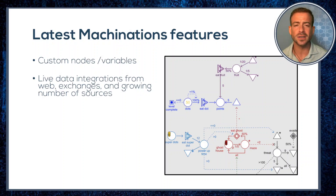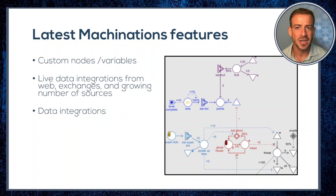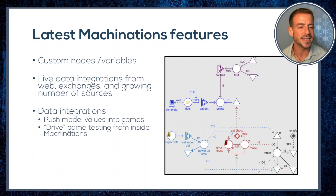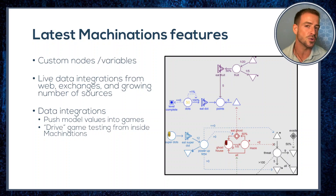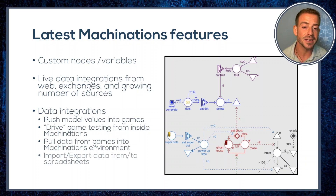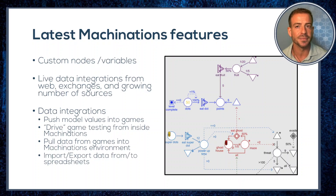There are also integrations with game engines that look incredibly powerful. You can use your Machinations model to drive game parameter values in real time, allowing you to instantly balance and calibrate your game from within the Machinations environment. They've got a really funny video demonstrating this feature which I link to below. You can also collect event data from your game and pull that into Machinations directly, and push and pull data from spreadsheets as well.